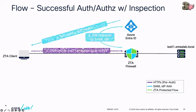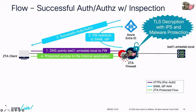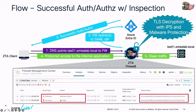Assuming the user connects and authenticates, we do apply continuous inspection to that traffic. If the user is accessing a protected application and tries to attack it — say the device is compromised or they try to upload malware — we will apply the full Snort IPS signature set configured to that traffic. You can apply balanced security and connectivity, security over connectivity, or a custom policy. You can also apply malware policies just like with any other traffic through Secure Firewall. The particular attack would be dropped, so the application only sees clean traffic. Those drop events will be logged on Secure Firewall.